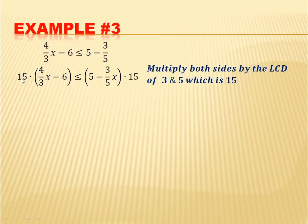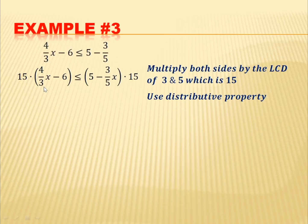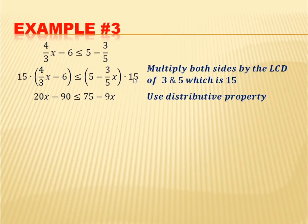We multiply 15 to one side and 15 to the other side, then use the distributive property — multiplying 15 by 4/3 x. 15 times 4 is 60, divided by 3 gives 20x. Minus 15 times 6, that's 90. Less than or equal to 15 times 5, that's 75. Minus 15 times 3/5, that's 45 divided by 5, which is 9. So we now have 20x minus 90 is less than or equal to 75 minus 9x.